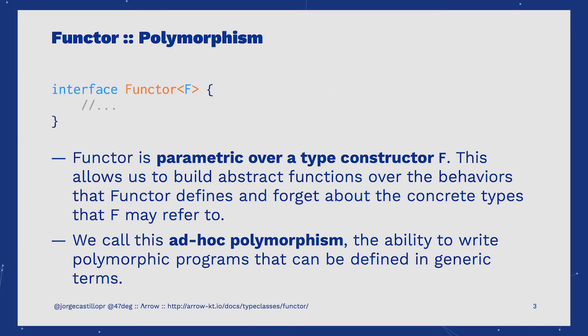Functor is parametric over a generic type F. Here, F stands for a data type or what we also call a type constructor. Thanks to this, we can declare generic functions encoded on top of the behaviors provided by Functor, and forget all about the concrete data types used for F. This is called ad hoc polymorphism, and that's how type classes allow us to encode completely generic and polymorphic programs that can work over many different data types.